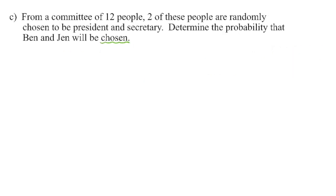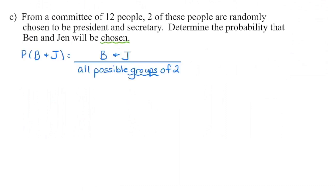In our final question, we have a committee of 12 people. Two will be randomly chosen to be president and secretary. Determine the probability that Ben and Jen will be chosen. I'm not looking for the probability that Ben is president or Jen is secretary specifically — just whether Ben and Jen are the two people chosen. I'll set this up as a combination question, choosing groups of two who are then assigned roles afterward.